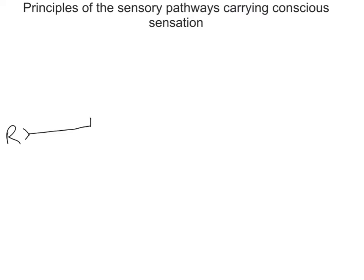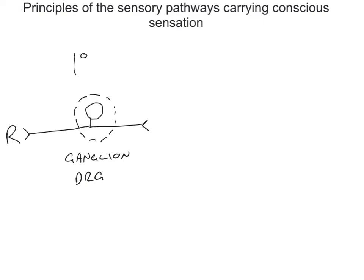That sensory neuron has its cell body within a sensory ganglion — typically a dorsal root ganglion, a DRG. But it could be the trigeminal ganglion providing sensation to the face. We call this neuron the first neuron in the chain: the first order neuron, or the primary sensory neuron. The first order neuron projects into the central nervous system, crossing the boundary between the peripheral nervous system and the central nervous system.